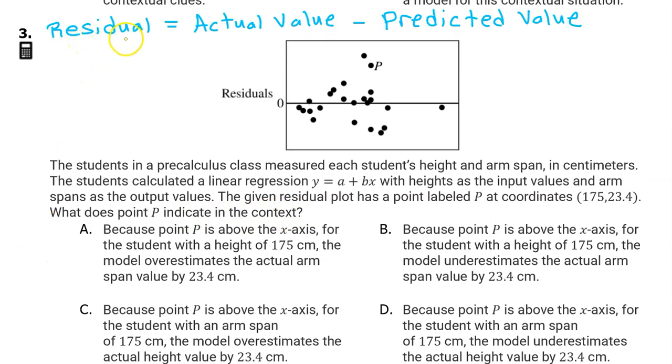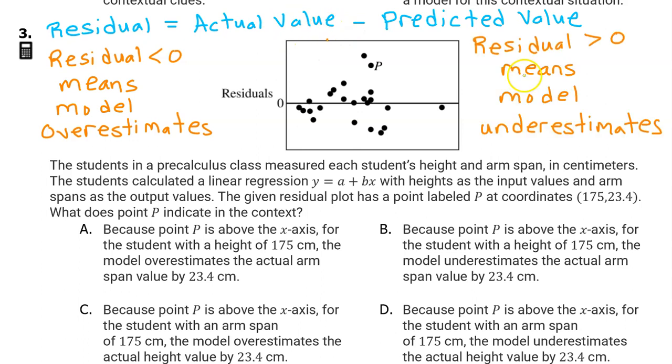Remember that residual value equals actual value minus predicted value. So if the predicted value is too big, then you get a negative residual. In other words, a negative residual means that the model overestimates. Similarly, if the predicted value is too small, then you get a positive residual. So a positive residual means the model underestimates.